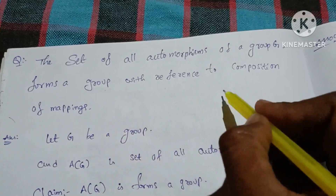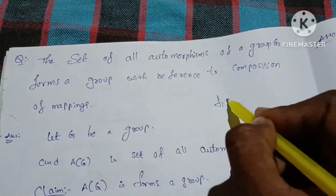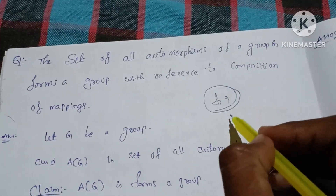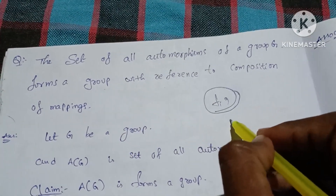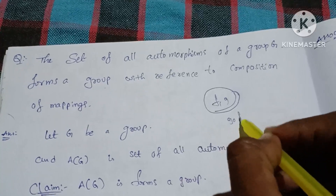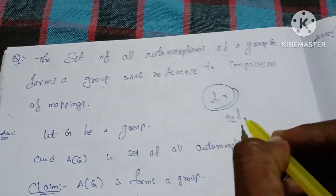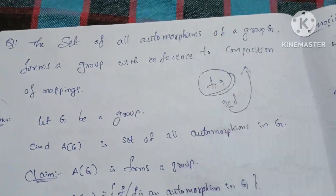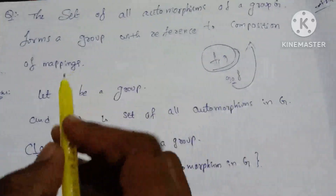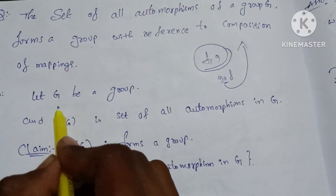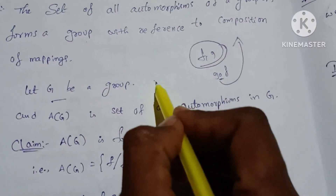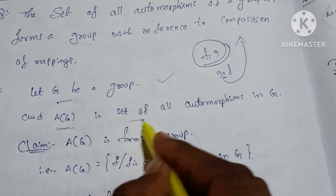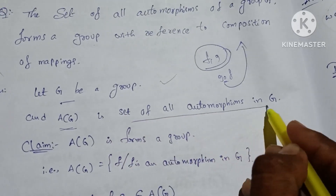I'll show you the functions. I'll define a binary operation — the circle operation, G circle F — which represents composition of mapping.